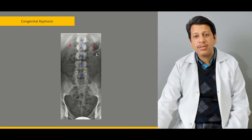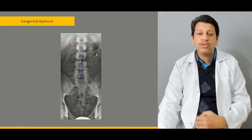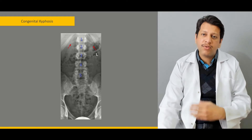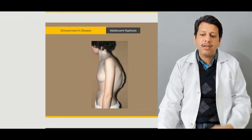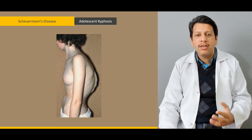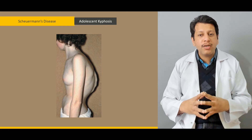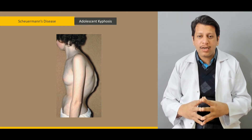The first type is congenital kyphosis, which is usually present at birth and may present with either anterior failure of formation or failure of segmentation. Then we will discuss the most common disease of adolescent kyphosis, that is Scheuermann's kyphosis or Scheuermann's disease.